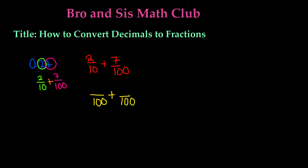We know that 7 over 100 already has a denominator of 100, so we don't change that fraction — we keep it as 7 over 100. However, 2 tenths we do need to change. So what do we multiply 10 by to get 100?